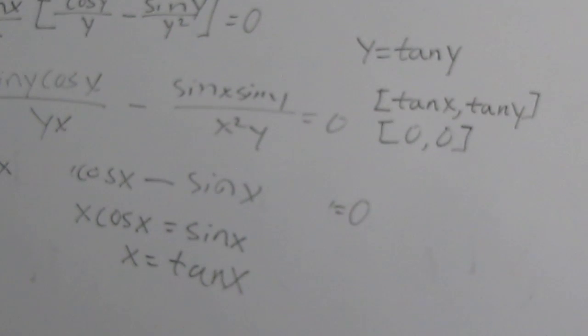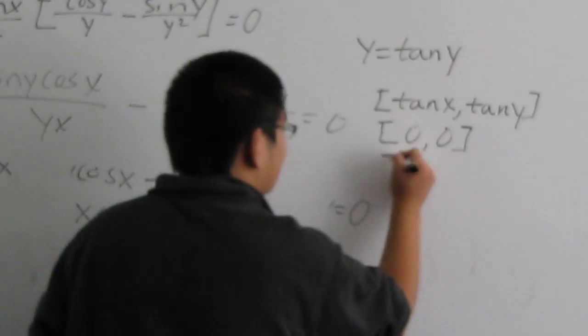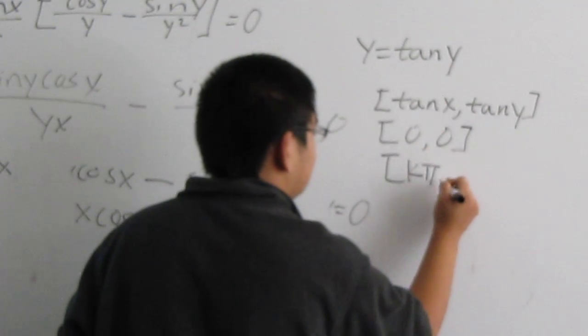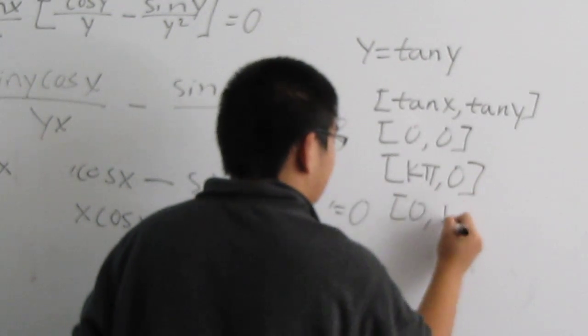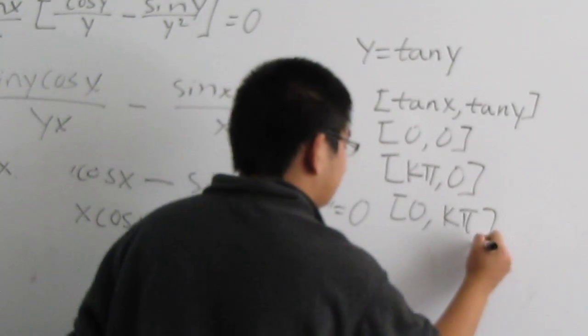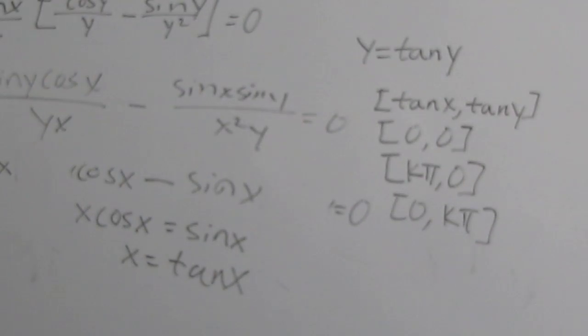But there are also two other different forms of solutions. Where k pi comma 0 and 0 comma k pi. Because these are on the axes.